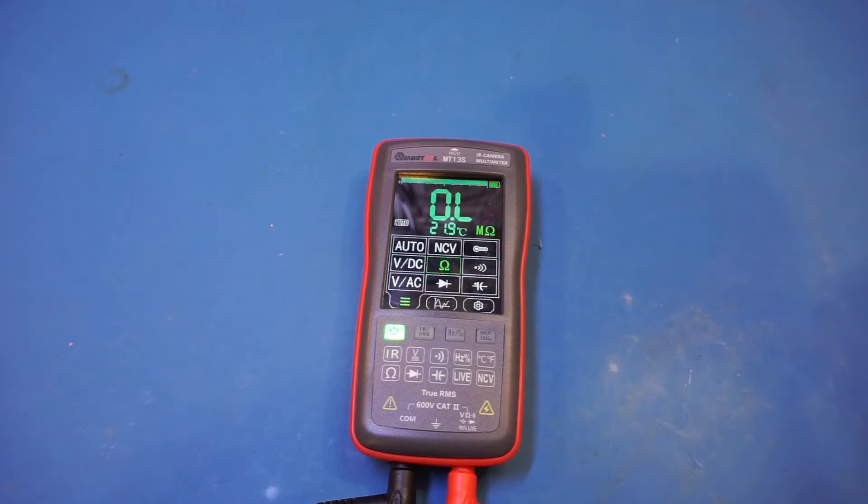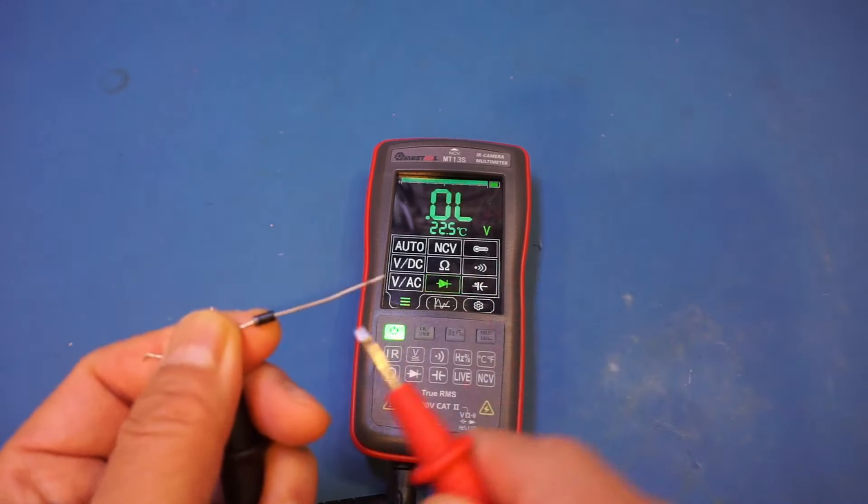Okay, let's move on to the diode mode. Now, if you recall, when I reviewed the ET12S, I mentioned one of the shortcomings is that for that meter, it was not able to measure the forward voltage drop of anything beyond the standard silicon diode. So let's actually see how the MT13S behaves. And the first diode we're going to measure is this silicon diode. Let's take a look.